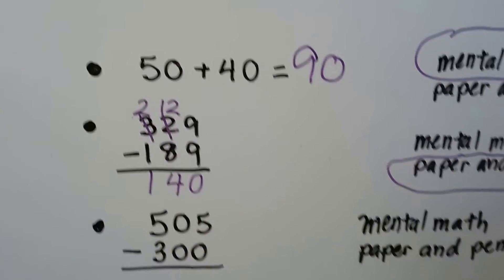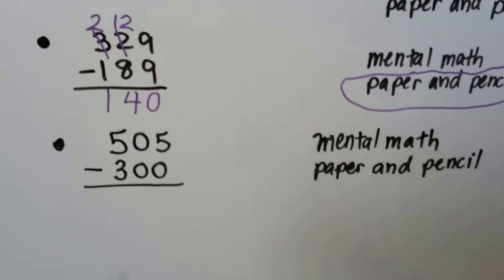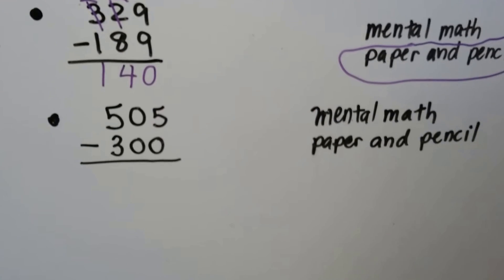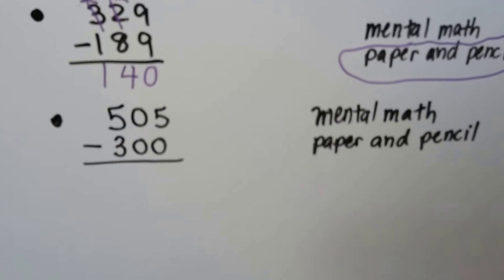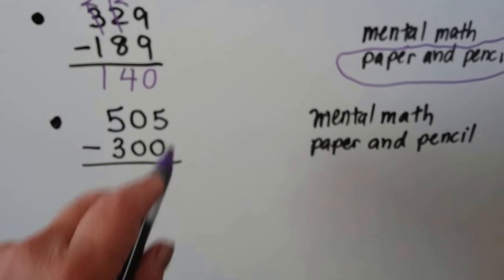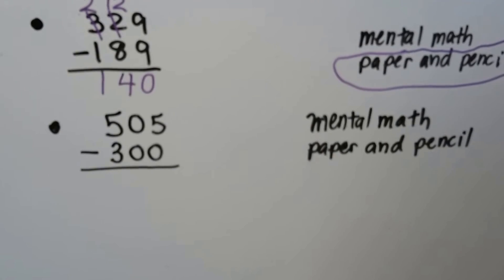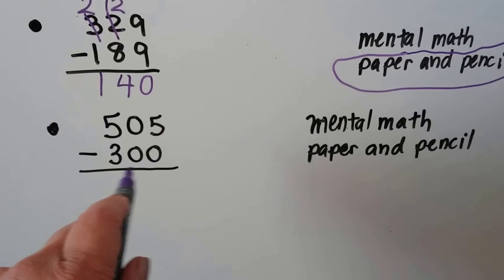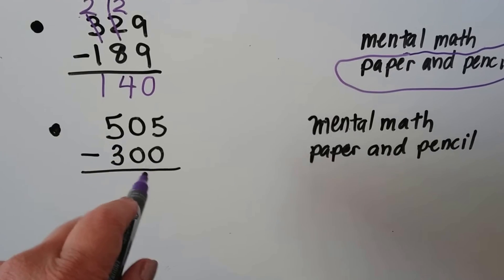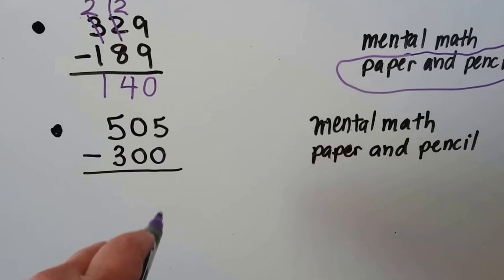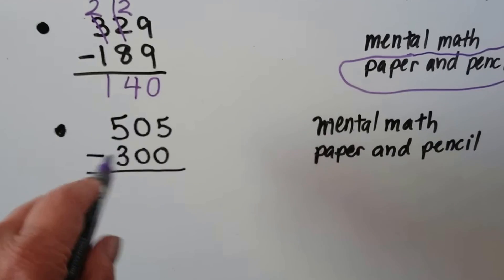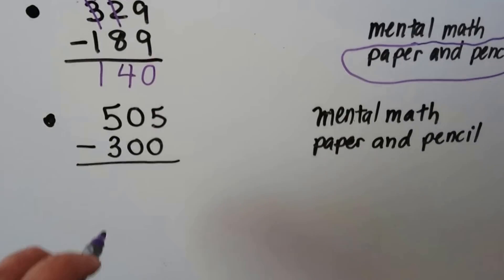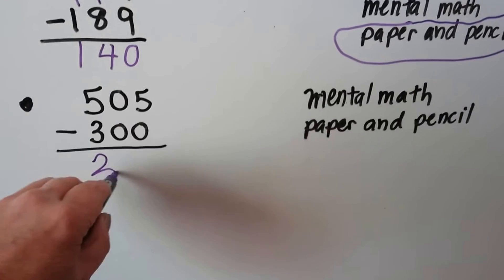How about this one - could you use mental math, even though there's a five in the ones place? Because we're taking away zero tens and zero ones, we just drop those down. This is just five take away three, so we really could use mental math for this one - the answer would be 205.